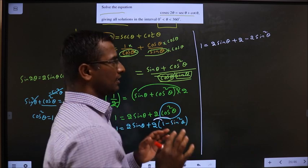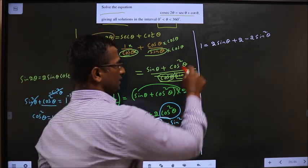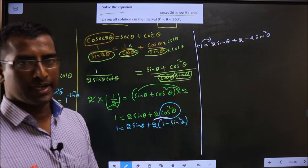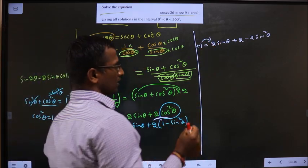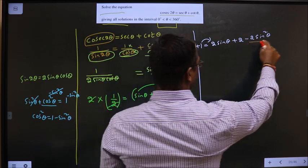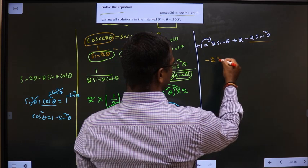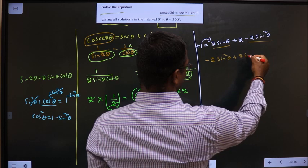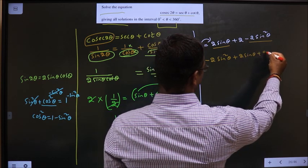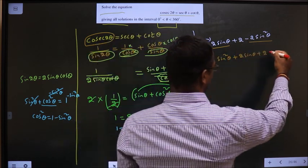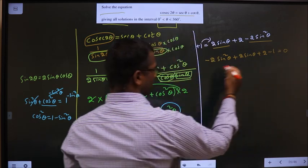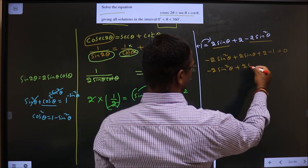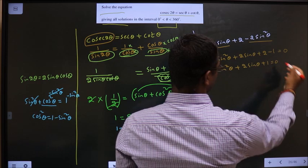Take all the terms to one side. What I mean is shift this plus 1 to this side and arrange it in proper quadratic form. Proper quadratic means first square term I will write. Next, sin θ. After that, constants. Plus 1 shifted will become minus 1 equal to 0. So this will become minus 2 sin square θ plus 2 sin θ minus 1 equal to 0.